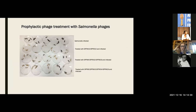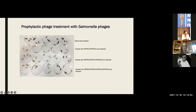We did a lot of work seeing how good the phages were in different model systems before going near any animals — starting in flasks, then biofilm models, and then Galleria mellonella insect models. When we gave the insects salmonella, they turn black when they die. But when we treated them with different combinations of our phages, they stay white. This showed in a primitive animal model that the phages were very effective, giving us the confidence to do actual trials in higher animals.